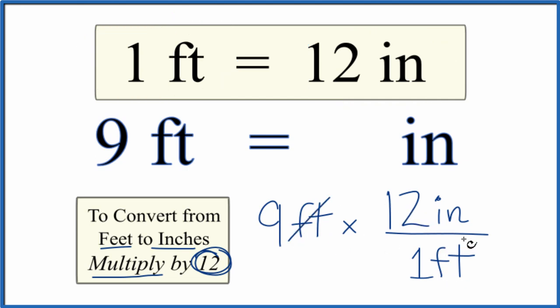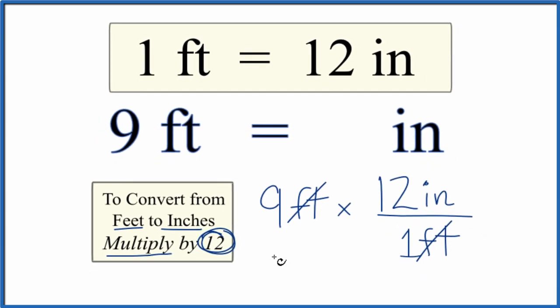Feet on the top and bottom, they cancel out. So 9 times 12 inches is 108 inches. So in answer to our question, 9 feet equals 108 inches.